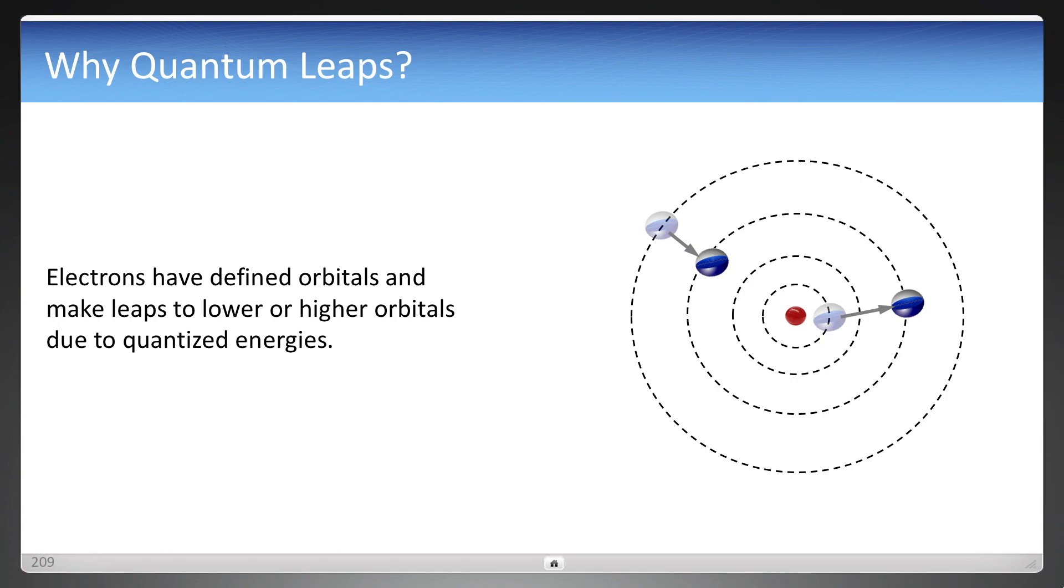All right, another question is why quantum leaps? Because electrons have defined orbitals, and they move from lower to higher orbitals, or vice versa. But it's quantized energy. Why?